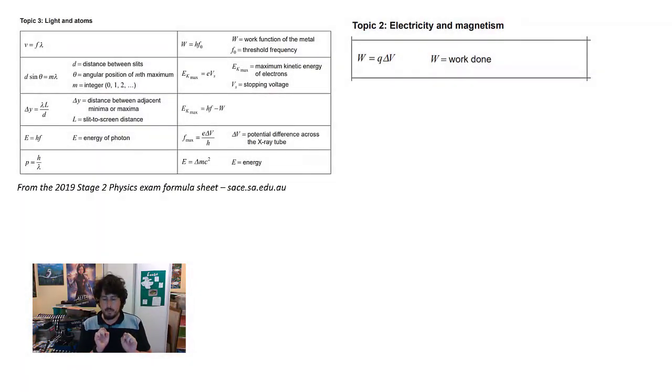I've just borrowed some formulas from the Stage 2 or Year 12 Physics South Australian Curriculum formula sheet, and the key thing here is to remember that the maximum kinetic energy of an electron, when it slams into a tungsten nucleus and stops, transfers all of that kinetic energy to the maximum frequency x-ray.